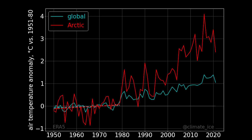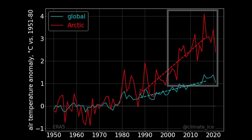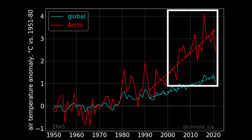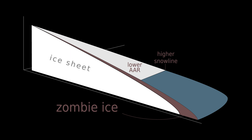This disequilibrium snapshot is true today for Greenland, as the Arctic climate really didn't start heating up until the past two decades. The flow and shape readjustments are not nearly in equilibrium — thus the zombie ice.